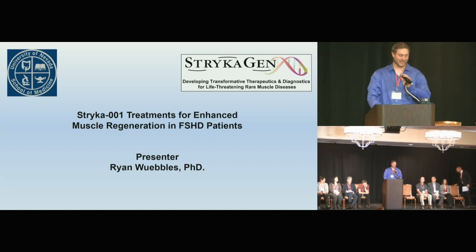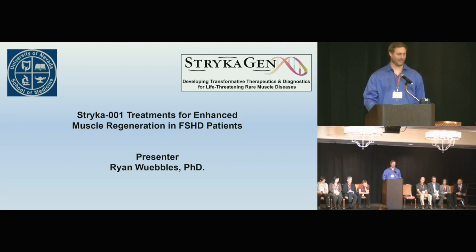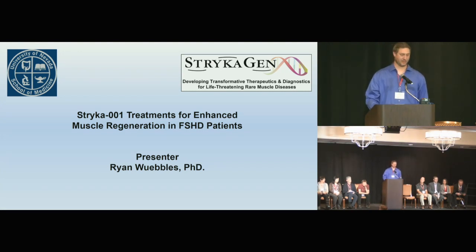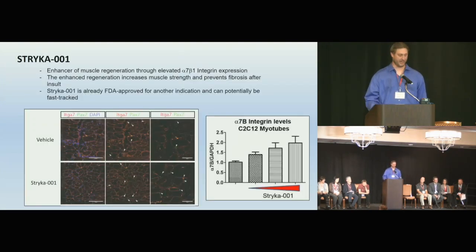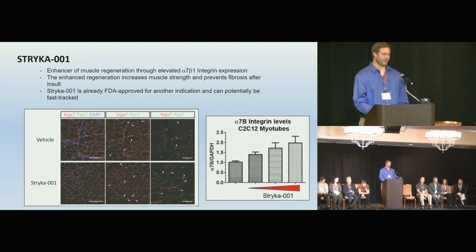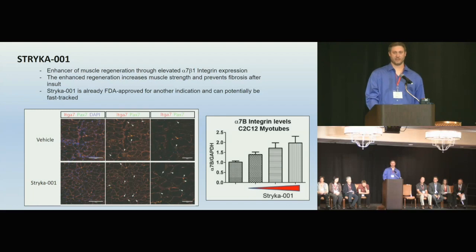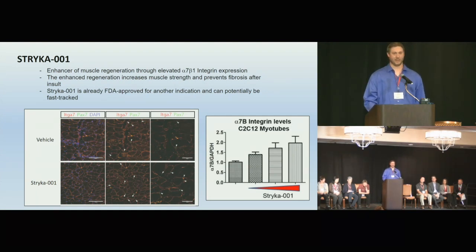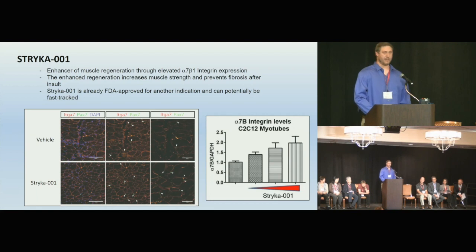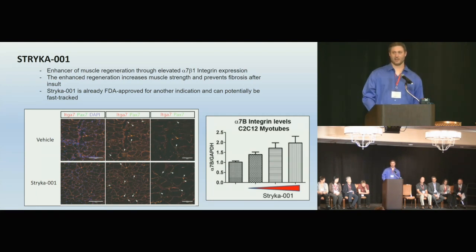Our next speaker is Ryan Wubels from Strykogen. He's developed a treatment at UNR that enhances muscle regeneration in several muscular dystrophies, and is also investigating it in FSHD. It was originally found in a screen for alpha-7 integrin enhancers. When used in a mouse model for Duchenne's, it significantly increased the level of muscle regeneration, leading to consideration of its use in other muscular dystrophies including FSHD.